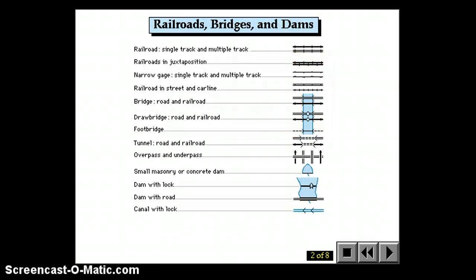There are specific symbols for railroads, bridges, and dams. Whether the railroads are wide or narrow, drawbridges, dams that have locks for boats to pass through, dams that have roads crossing them, all have specific symbols that are used across all USGS topographic maps.